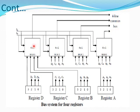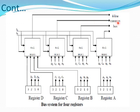Similarly, if S1=1 and S0=0, then Register C is selected. If S1=1 and S0=1 (both selection inputs are 1), then Register D is selected. Multiplexer 0 selects D0, multiplexer 1 selects D1, multiplexer 2 selects D2, and multiplexer 3 selects D3 as output, and these outputs are passed on the 4-line common bus.